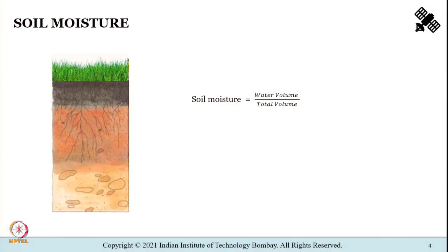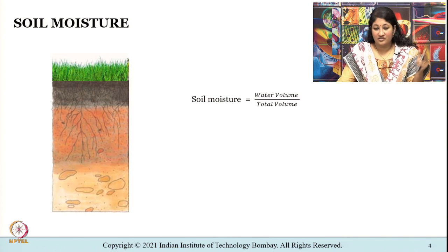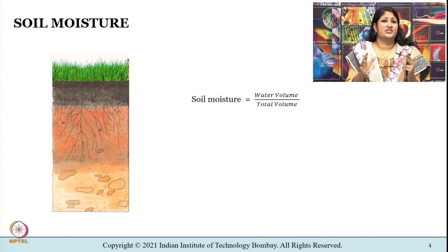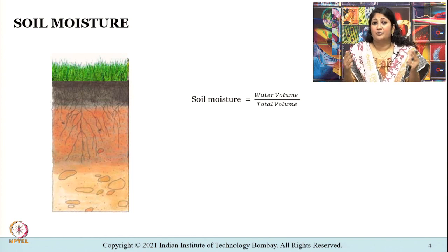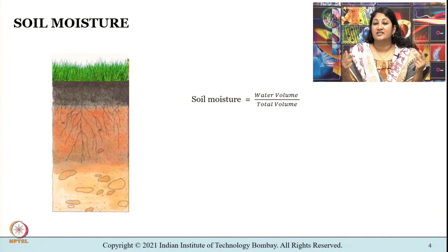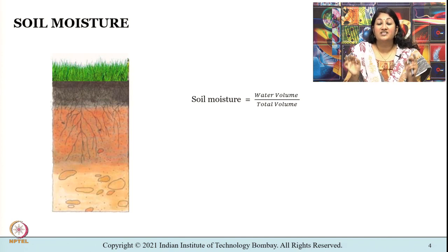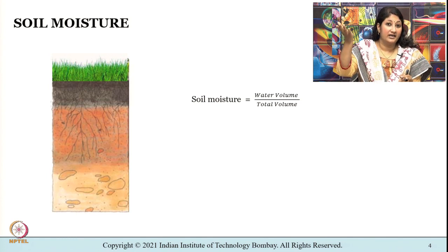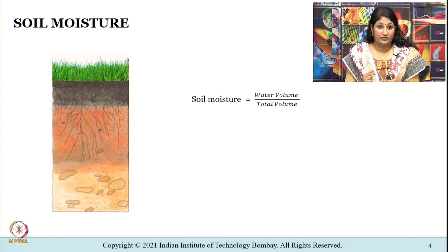Soil moisture is the water stored in soil, expressed in terms of volume or weight. The concept of soil moisture differs from the perspective of a farmer versus a meteorologist. This variable is highly varying in space as well as in time — it is not homogenous — which makes it even more challenging to map the spatiotemporal distribution of soil moisture from radars onboard satellites that are kilometers above the surface of the earth.